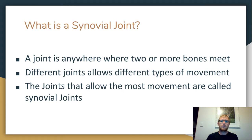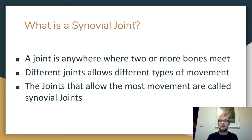So what is a joint — a synovial joint to be specific? A joint is anywhere where two or more bones meet in the human body. It could be two parts of your arm, two parts of your head — wherever two bones come together, that place is called a joint. Different joints allow different types of movement, and some joints actually allow no movement. The joints that allow the most movement are called synovial joints, and they're the ones we're interested in in PE, because PE is about movement.